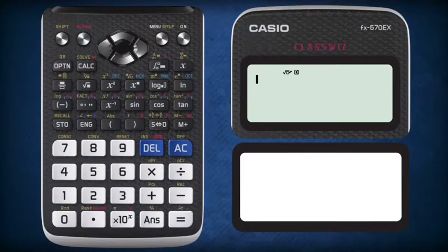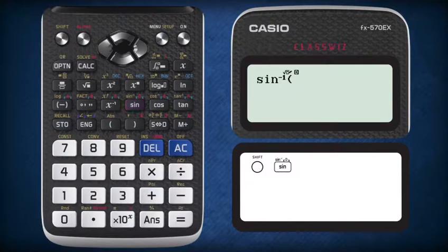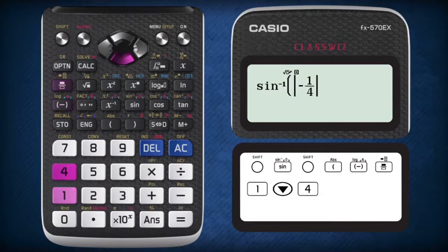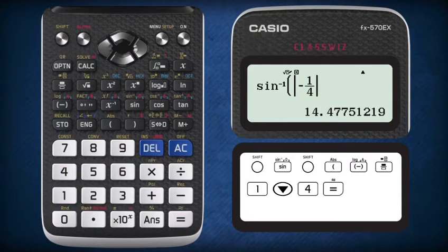So on the Casio Class Wiz, press shift followed by the sin button, then press shift again and open bracket to insert the modulus column. Then insert -1/4 into the bracket and press equal. You will see that the basic angle is 14.48 degrees.